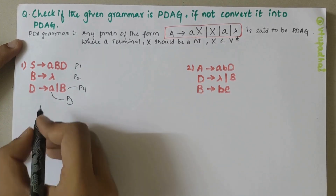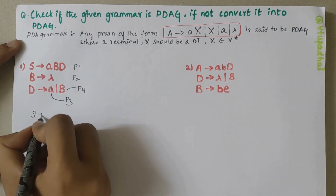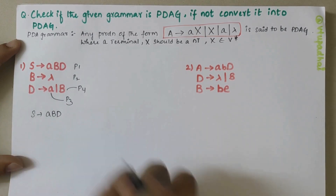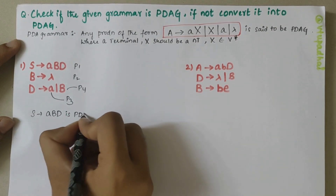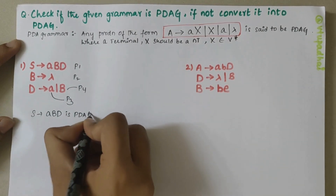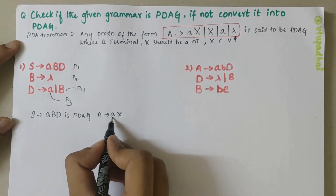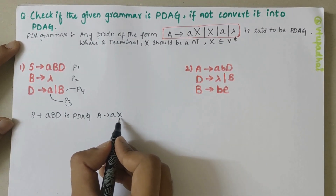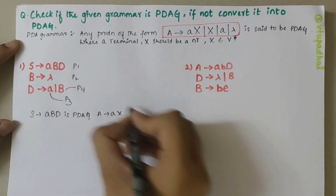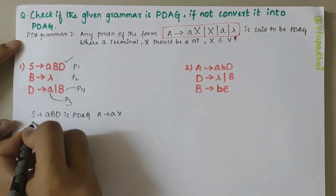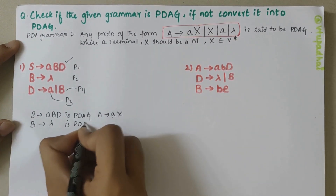The first production, S derives ABD, is PDAG because it is of the form A derives aX — there has to be one terminal followed by n number of non-terminals. Next, B derives lambda is PDAG because it is of the form A derives lambda.